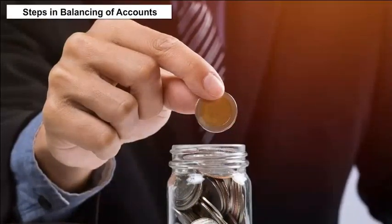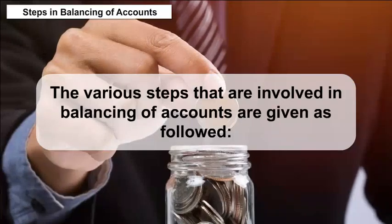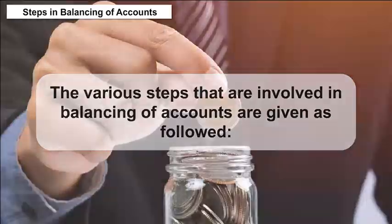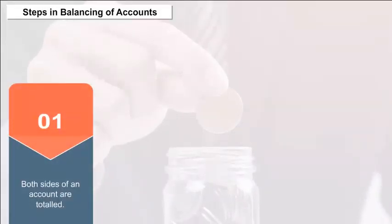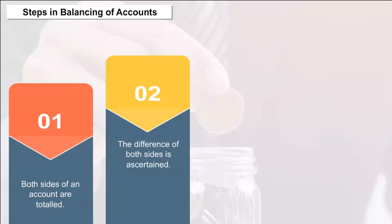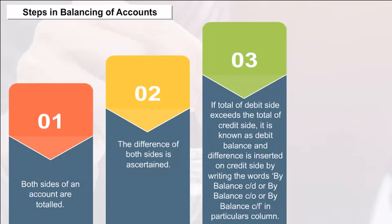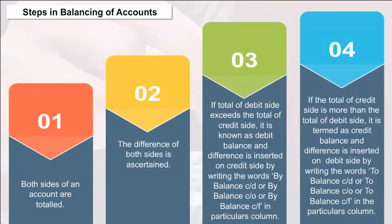Steps in Balancing of Accounts: Both sides of an account are totaled and the difference is ascertained. If the total of the debit side exceeds the total of the credit side, it is known as a debit balance, and the difference is inserted on the credit side by writing 'By Balance C/D' or 'By Balance C/F' in the particulars column. If the total of the credit side exceeds the total of the debit side, it is known as a credit balance, and the difference is inserted on the debit side by writing 'To Balance C/D' or 'To Balance C/F' in the particulars column.